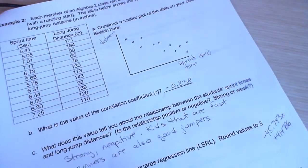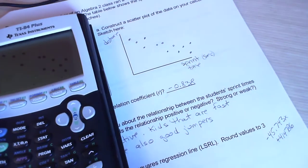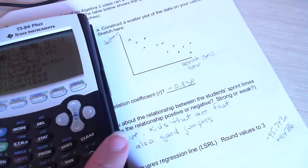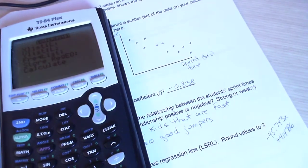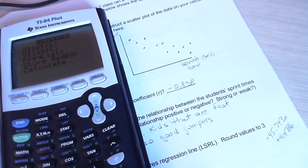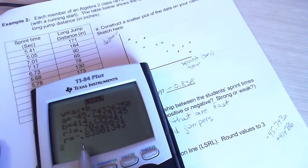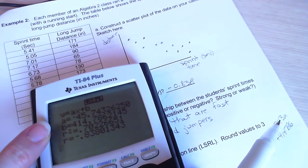Okay, now it says what is the value of the correlation coefficient. So that is stat, over to calc, menu item 4. And then enter, enter, enter. And there is my information.